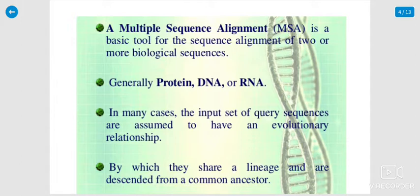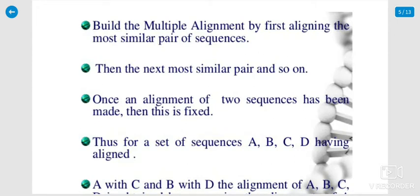Generally, proteins, DNA, and sometimes RNA are used in multiple sequence alignment. In many cases, the input set of query sequences are assumed to have an evolutionary relationship by which they share a linkage and are descended from common ancestors. Building the multiple alignment begins by first aligning the most similar pairs of sequences, then the next most similar pair, and so on.